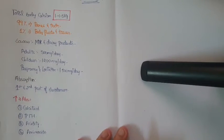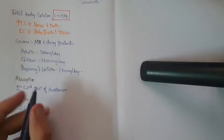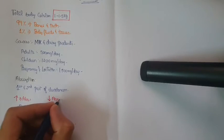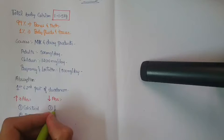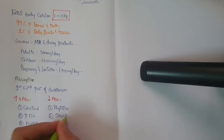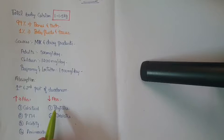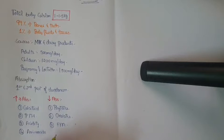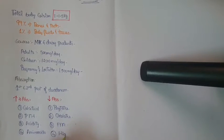What are the factors which decrease the absorption rate? First important point is phytates. Next, oxalates. And also free fatty acids and high dietary fiber — these are the things which are going to decrease the absorption of calcium.